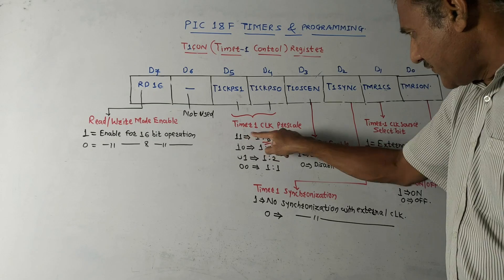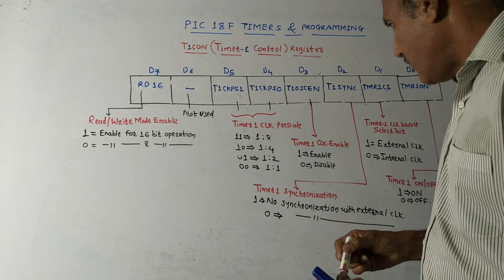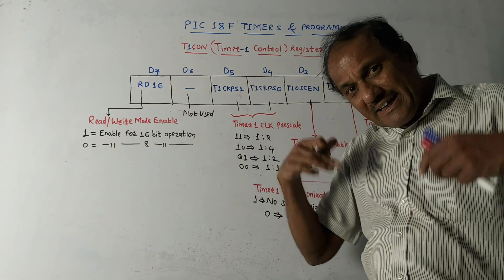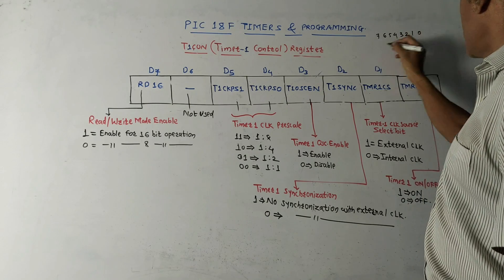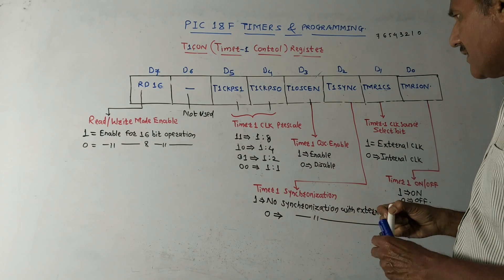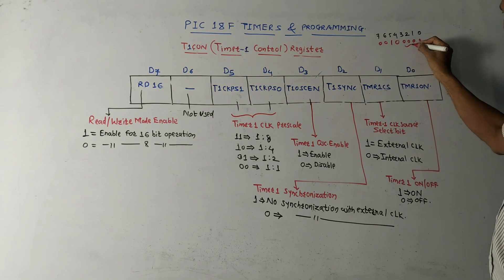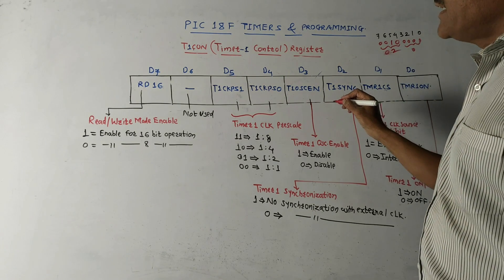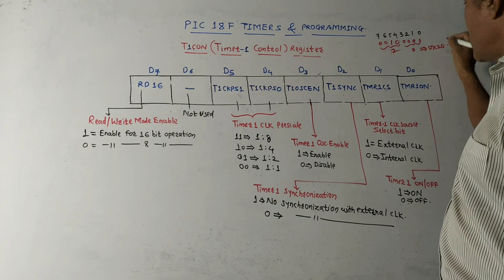The pre-scalar bits are important for programming. Different combinations are: if these bits are 1 1, pre-scale is 1:8; if 1 0, pre-scale is 1:4; for 0 1 it is 1:2; for 0 0 it is 1:1. For example, to use a pre-scale of 1:4 when initializing Timer 1, the bit position is 7 6 5 4 3 2 1 0. For 1:4, bits 5 and 4 should be 1 0, remaining bits are 0 by default. This combination gives 0x20.